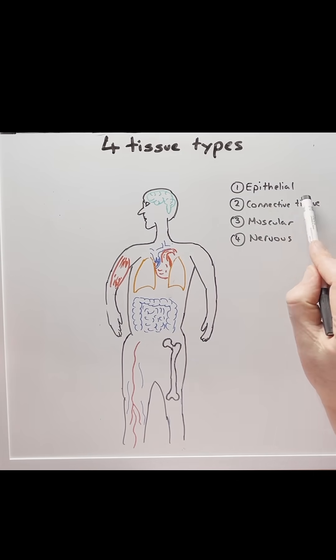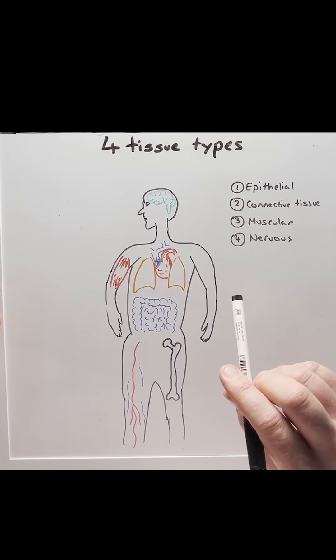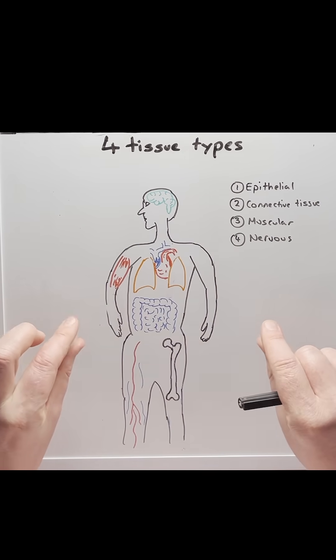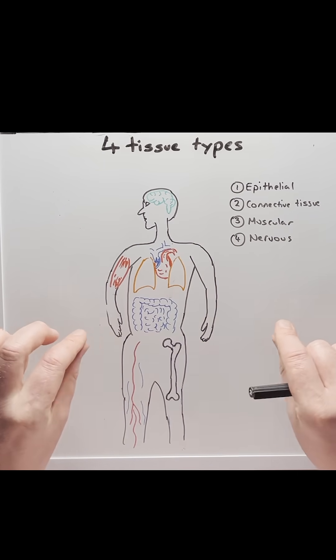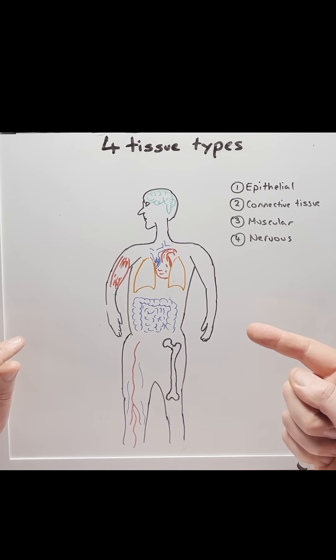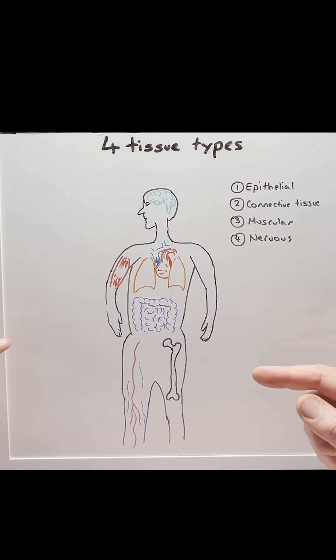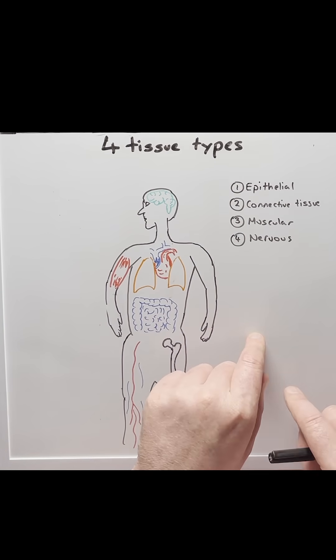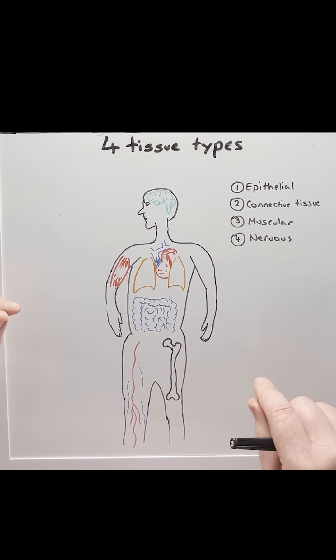Starting with epithelial tissue. These consist of cells in a continuous sheet, either as a single layer thickness, which we call simple epithelial, or in a multiple layer thickness, which we call stratified.